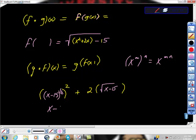So we get x minus 15 plus 2 times the quantity square root of x minus 15. And that would be a good enough answer for me.